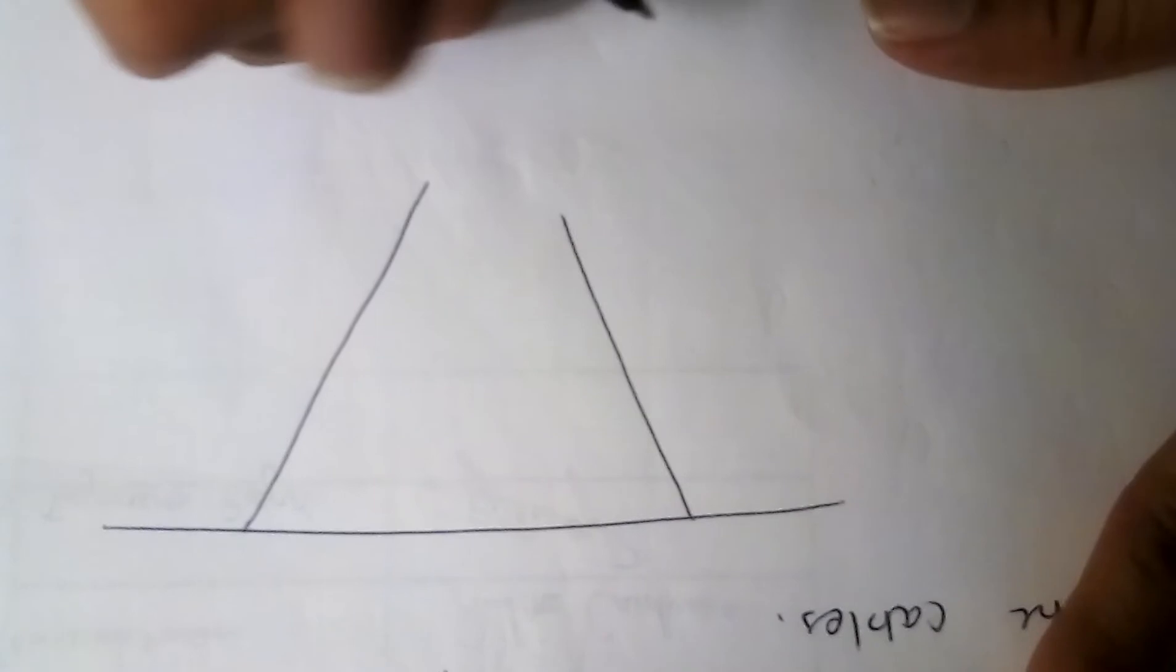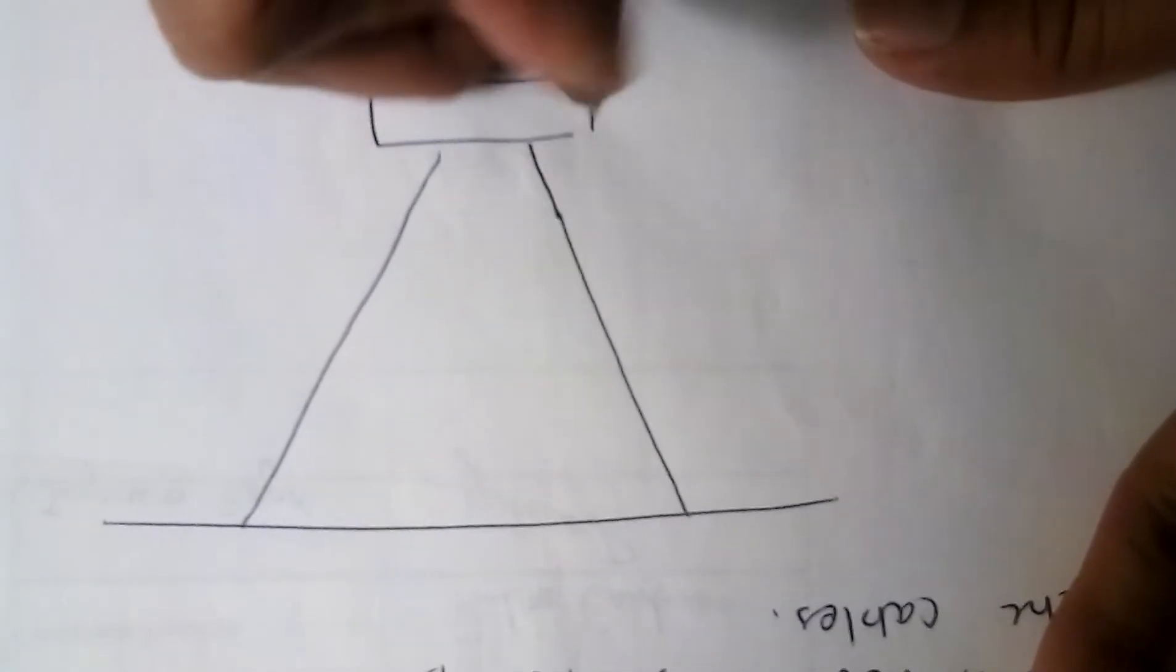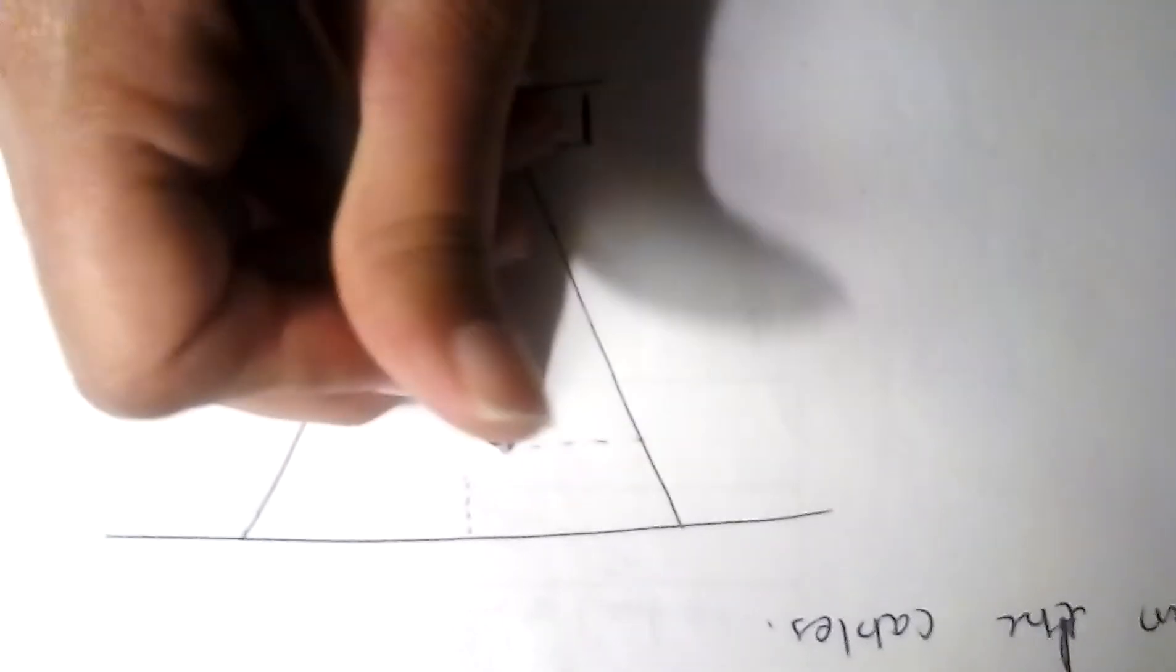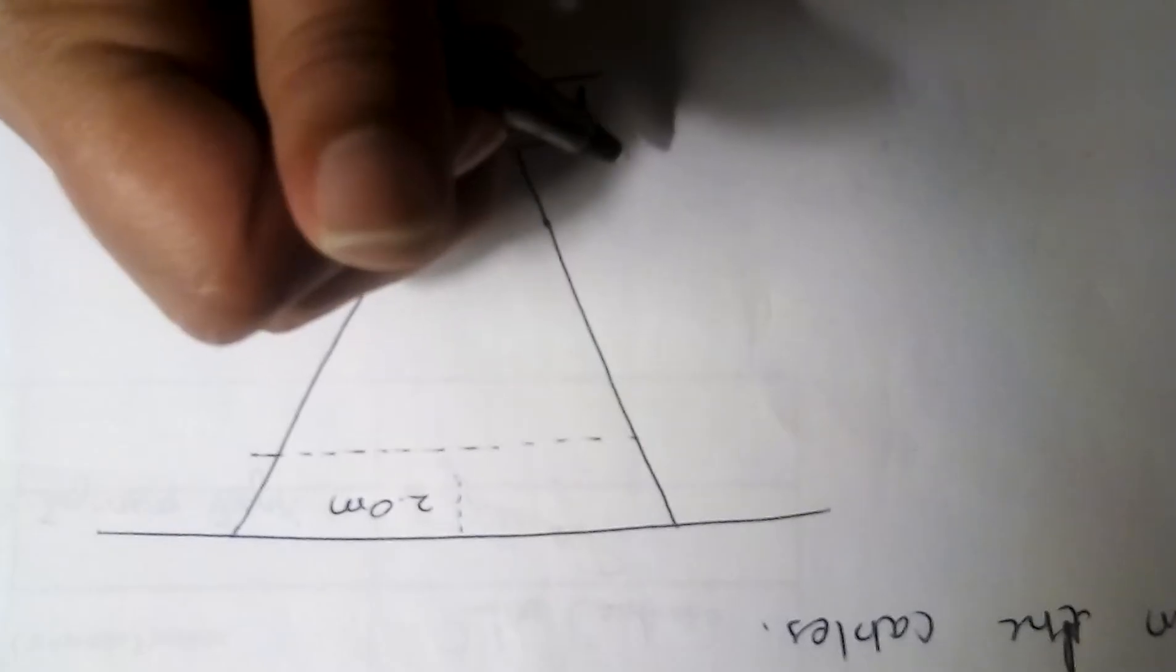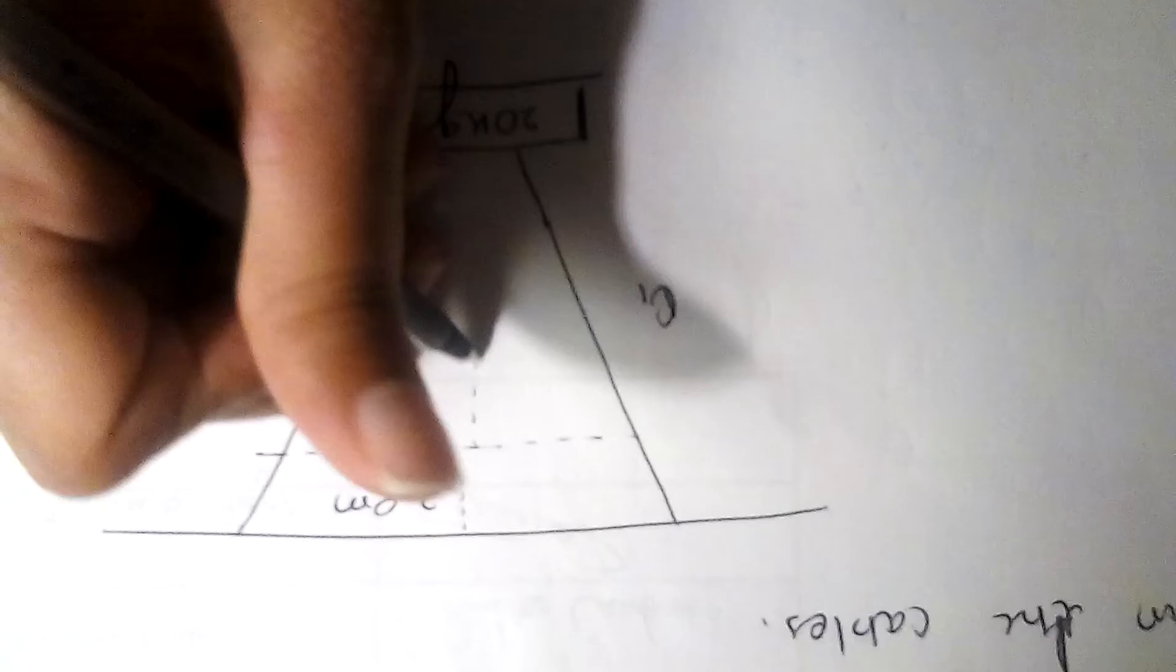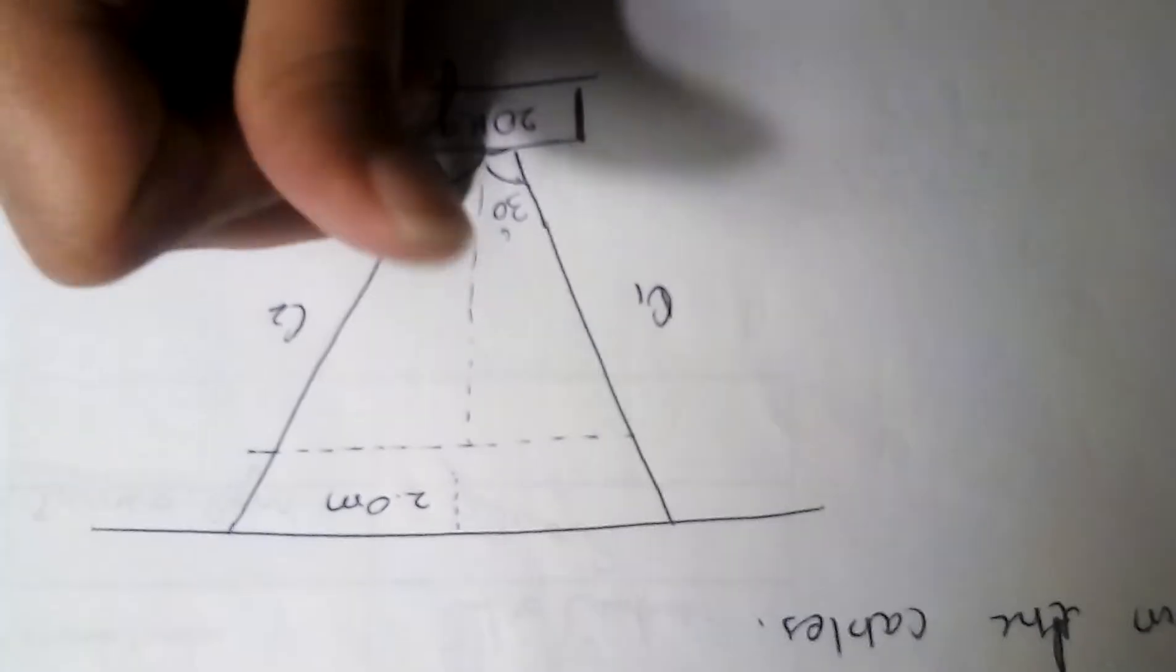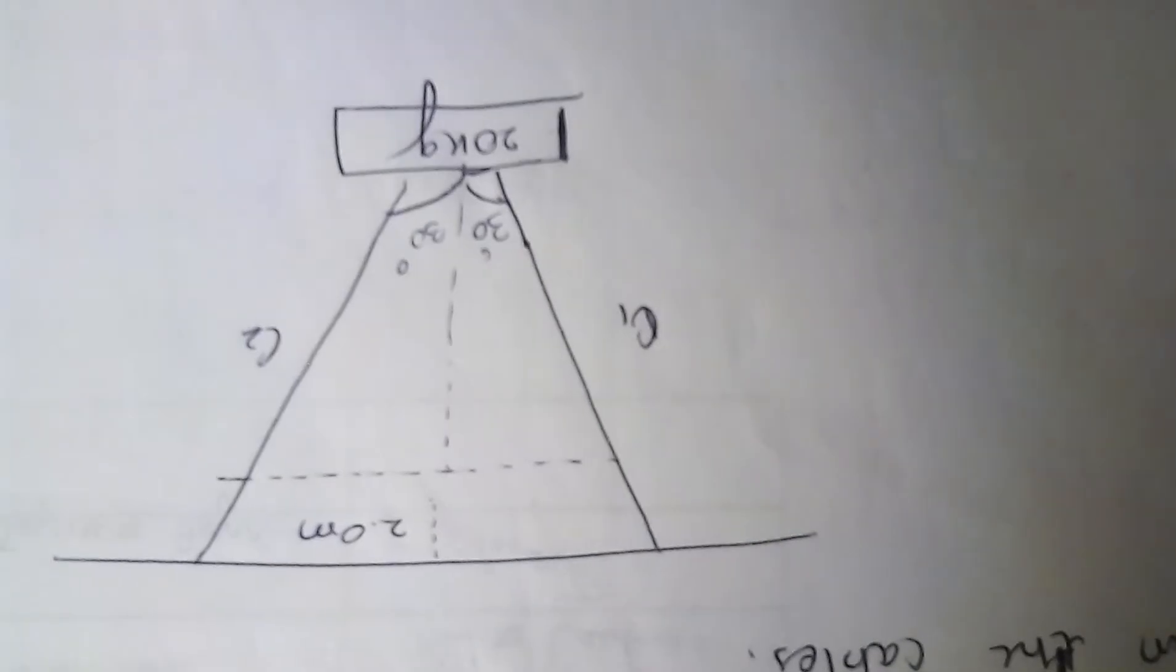If you can see, this is the mass which is 20 kg, and the way that it is suspended, we can see this distance is 2.0 meters. This is cable one, so you can write C1 and then C2, and then here are the angles which is 30 degrees.